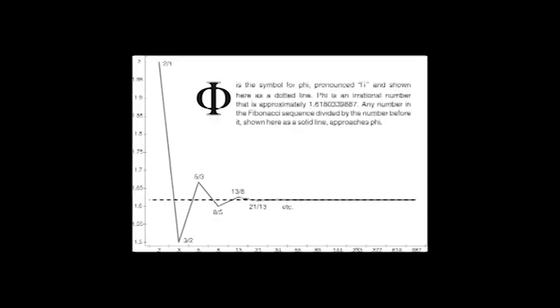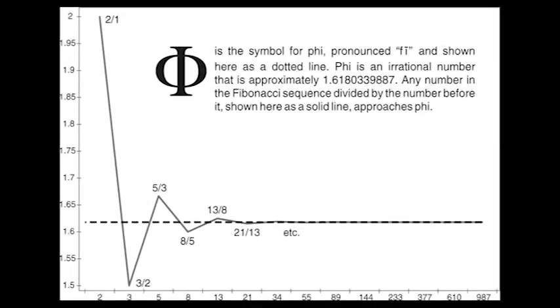And finally, the Fibonacci numbers can be used to calculate the golden ratio, known as phi. Phi is an irrational number. To get phi with the Fibonacci numbers, you take any Fibonacci number and divide by the number before it. For example, five divided by three, or eight divided by five, or thirteen divided by eight. The higher you go in the sequence, the closer you'll get to phi, the golden ratio.